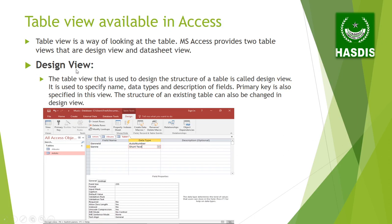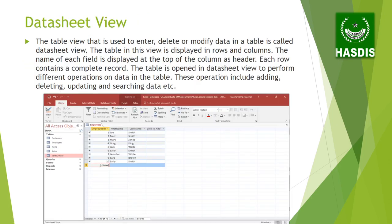So there are two views — the first is design view, which is used to design the table structure. The other view is datasheet view. The table view used to enter, delete, or modify data in a table is called datasheet view. The table is displayed in rows and columns, with field names at the top of each column as headers. Each row contains a complete record, and operations include adding, deleting, updating, and searching data.